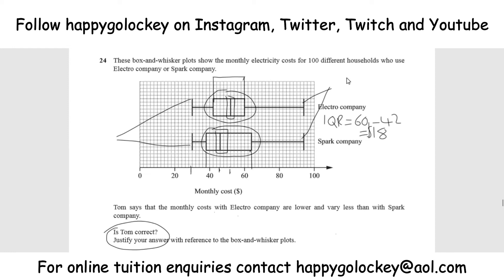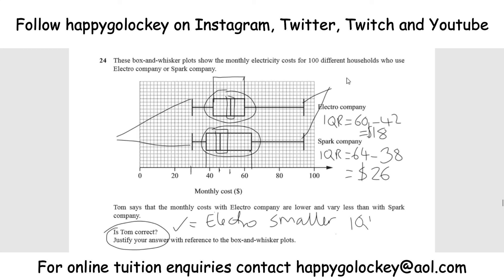Now let's look at the inter-quartile range of Spark. We've already said Spark's costs can be lower, but the inter-quartile range goes from 38 all the way up to 64, which is obviously going to be a slightly longer, more varied range. So 38 to 64 is a $26 range. So the time where Tom is correct, we can say Electro has a smaller inter-quartile range and therefore varies less — it's more consistent or less varied.